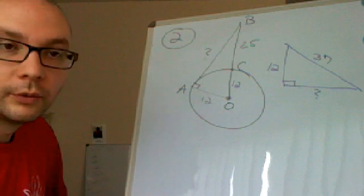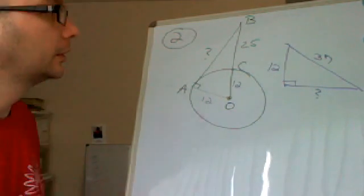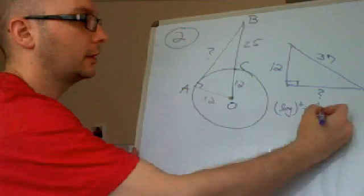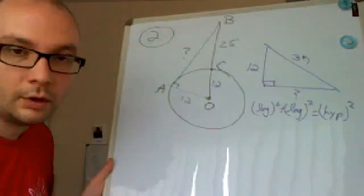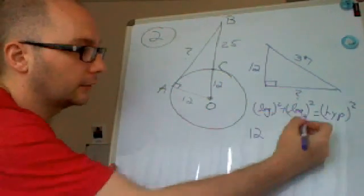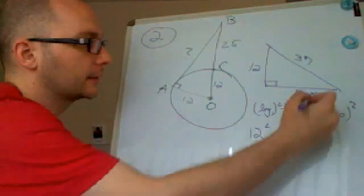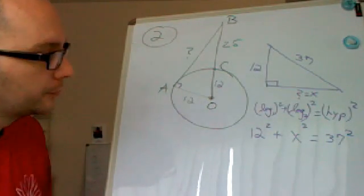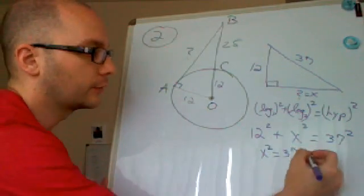Now we go back into our right triangle theorems. One that's really popular is the Pythagorean theorem. What that says is that the leg squared plus a leg squared is equal to the hypotenuse squared. Now we have an equation because we know one of the legs is 12. So it's 12 squared plus, let's call this side x, x squared will equal 37 squared. We need to solve that equation.